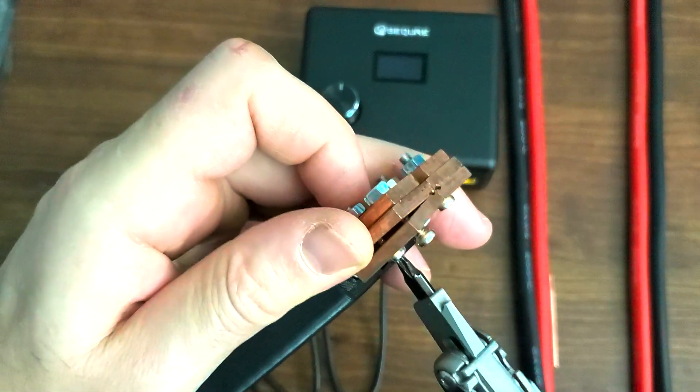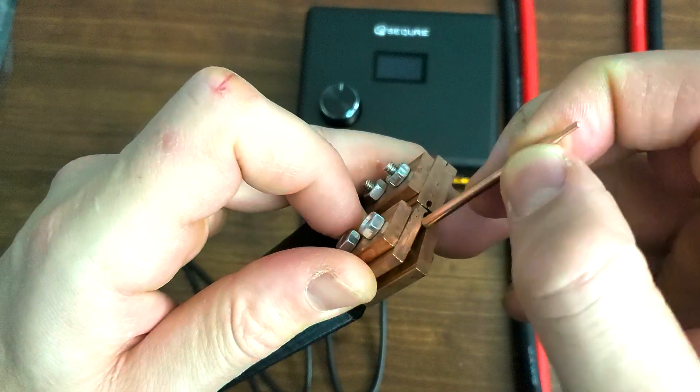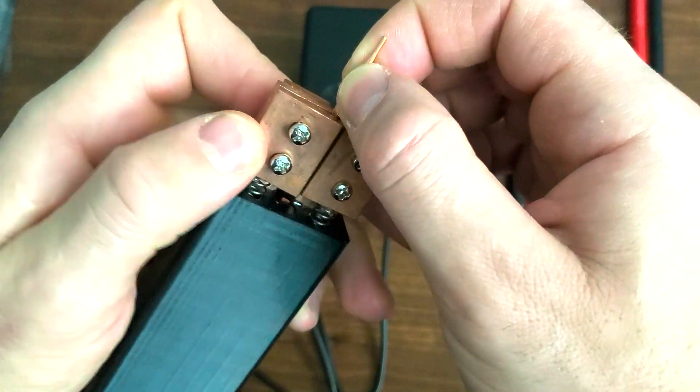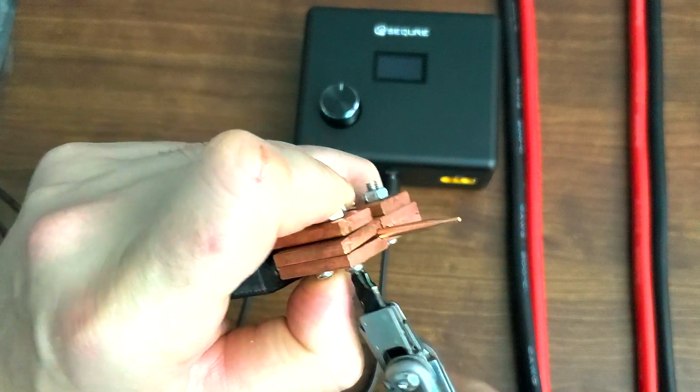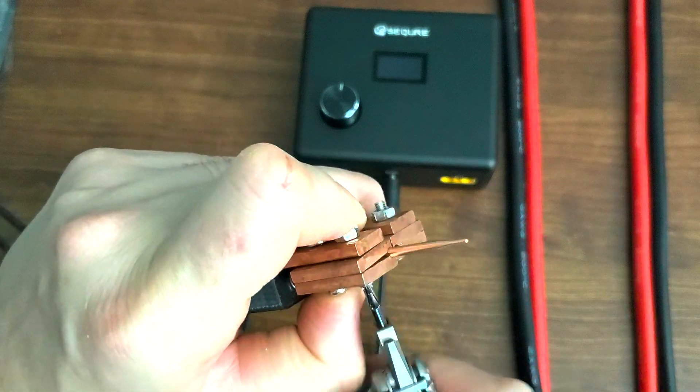You have to undo both screws. Now this plate is going to move out more and you'll be able to slide in the tip. Screw it back. Make sure it's tight and it's a clean connection.